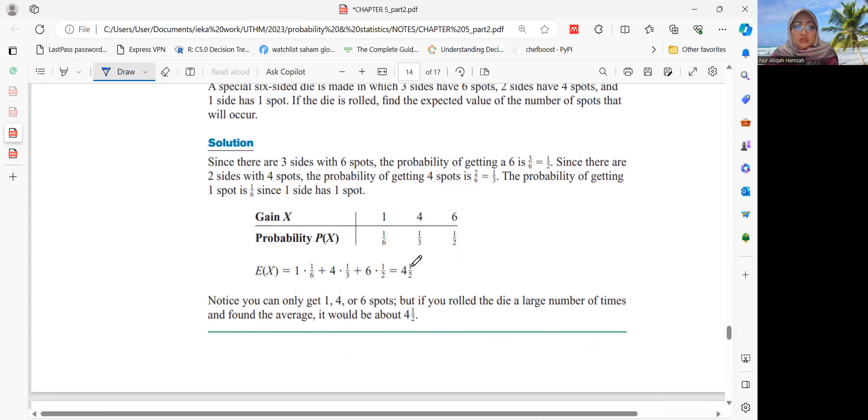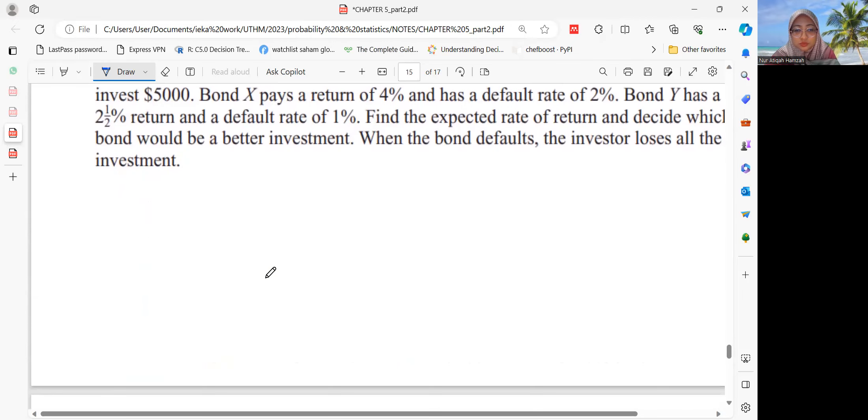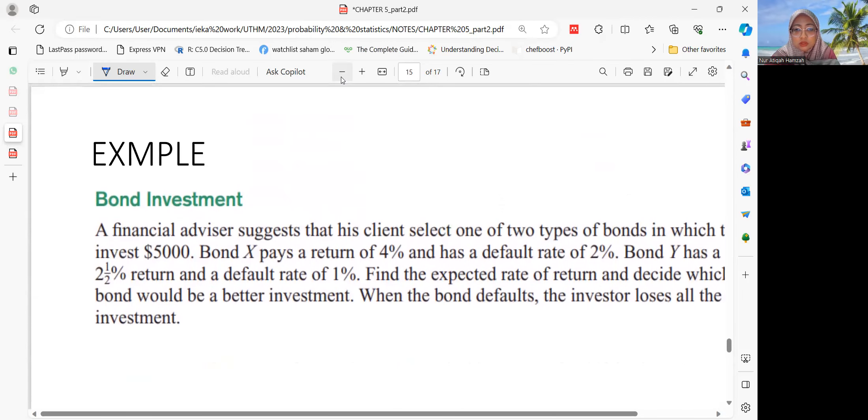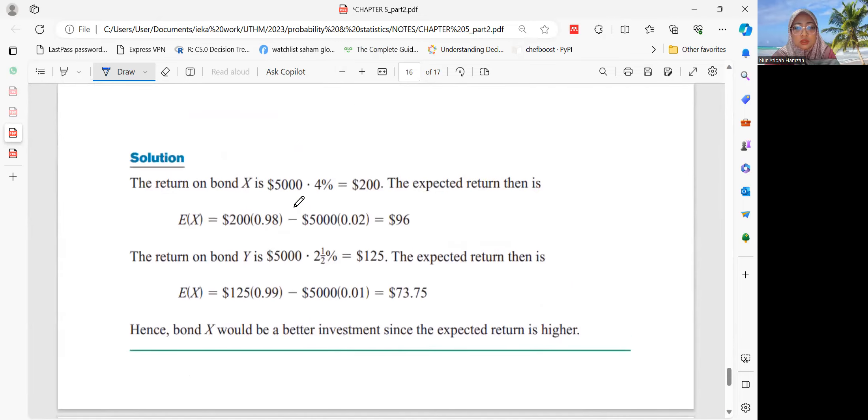So the expected value is summation of x P(x). So x times P(x), then we total them. We get 4 and 1 over 2. Notice that you can only get 1, 4, or 6. But if you roll the die a large number of times, then on average it will be 4 and 1 over 2.